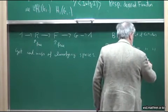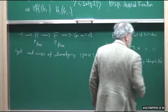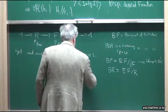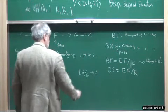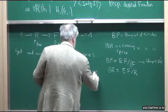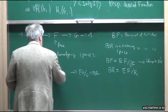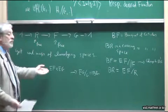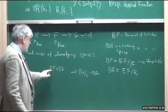We change to another classifying space and do the following. I take EG, so BG = EG over G. Associated to this homomorphism, I now take EF × EG. Both EF and EG are contractible, so their product is again contractible.